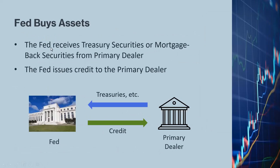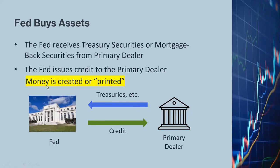What happens when the Fed buys assets? When the Fed buys assets, it receives treasury securities or mortgage-backed securities from a primary dealer, and in exchange, the Fed issues credit to the primary dealer. This is not paper money — it's an electronic form of money. When the Fed issues credit to the primary dealer, the dealer can turn around and loan the money to its customers or invest the money in other instruments. Therefore, when the Fed buys assets, it's in effect printing money, creating money, or adding liquidity to the overall market.